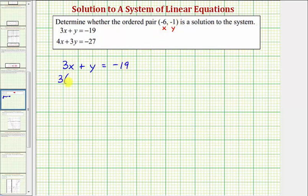So we'd have three times x is negative six plus y is equal to negative one. And now we'll simplify and see if the left side is equal to the right side. So three times negative six is negative 18, and negative 18 plus negative one is negative 19. Of course, negative 19 equals negative 19. So the ordered pair does satisfy the first equation.